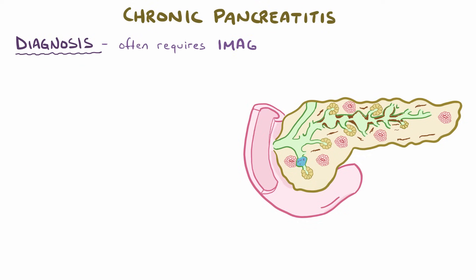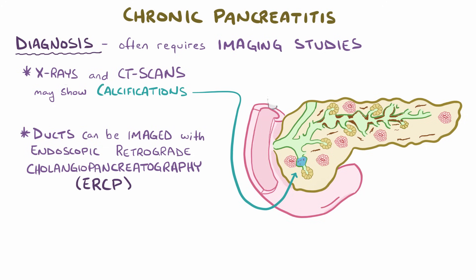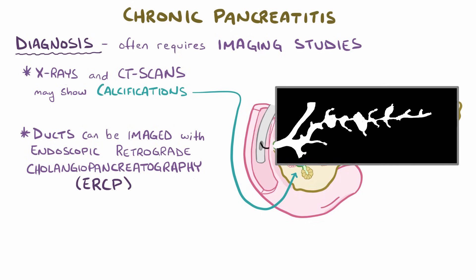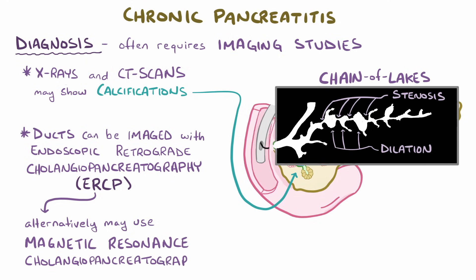Often times the diagnosis relies on imaging studies that can identify the structural changes to the pancreas. For example, abdominal x-rays and CT scans might show calcification of the pancreas. The pancreatic ducts themselves can be visualized with endoscopic retrograde cholangiopancreatography, or ERCP, which is a technique where an endoscope is passed down through the mouth to the duodenum, where it's used to deliver contrast medium to the pancreatic ducts. Subsequent fluoroscopy contrast studies can reveal structural changes to the pancreatic ductal system — for example, the duct might take on a chain of lakes pattern due to alternating stenosis and dilation of the ducts. An alternative technique that can also evaluate the pancreatic ductal system is magnetic resonance cholangiopancreatography, or MRCP.